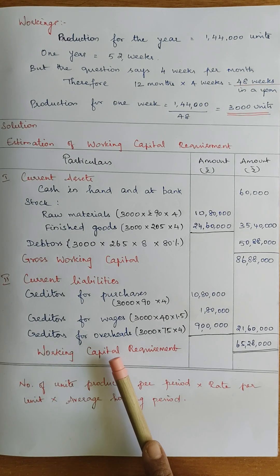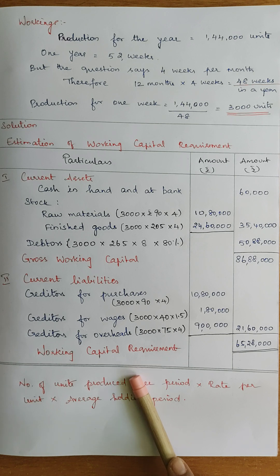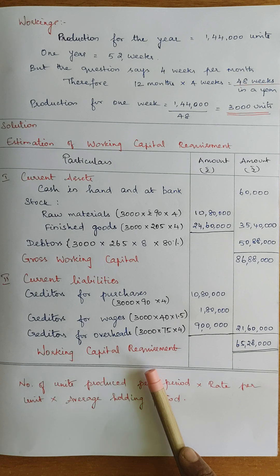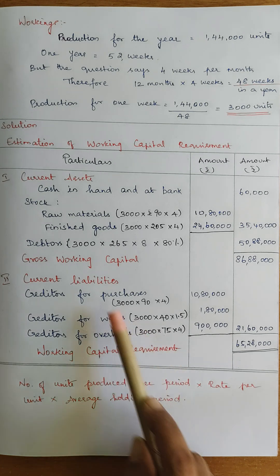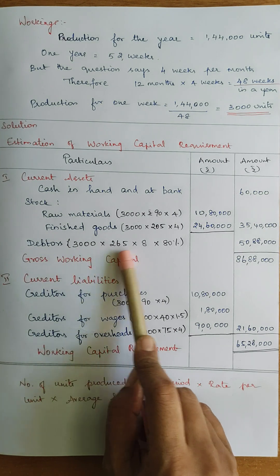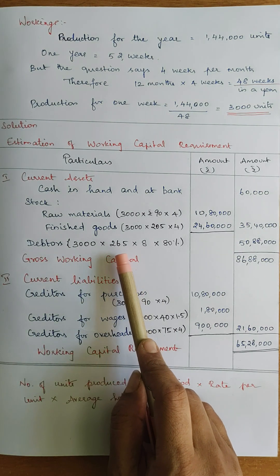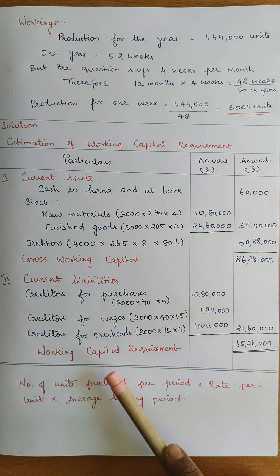This is the solution. In some versions of this sum, the difference is the cash cost approach. Depreciation is a non-cash item, so it is excluded from cash cost calculations. If depreciation is given separately, then for debtors we calculate at cash cost instead of selling price. But in this case, depreciation was not separately excluded, so we used selling price per unit. Thanks for watching the video. Stay tuned.